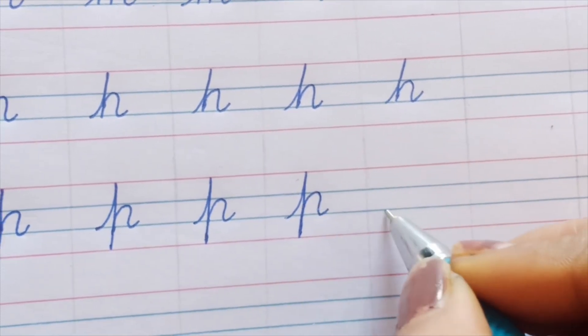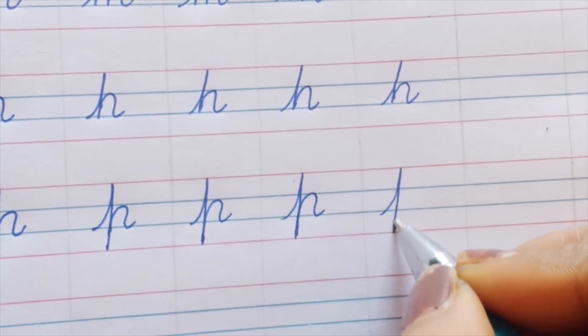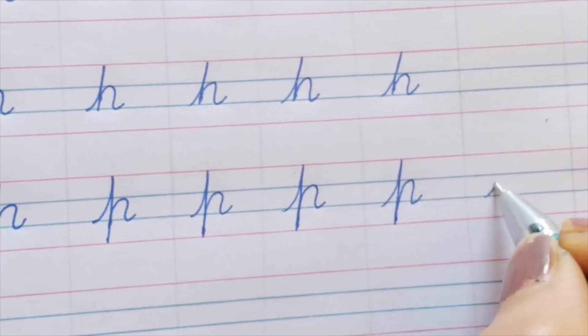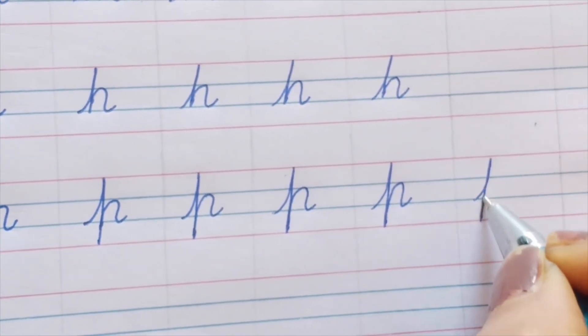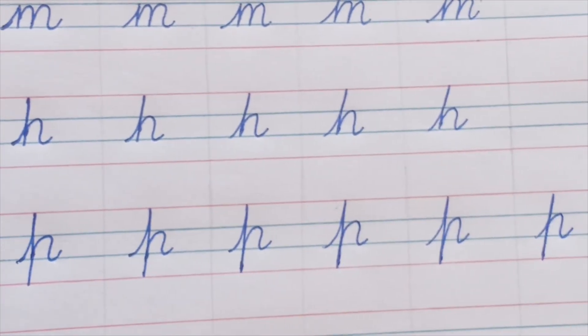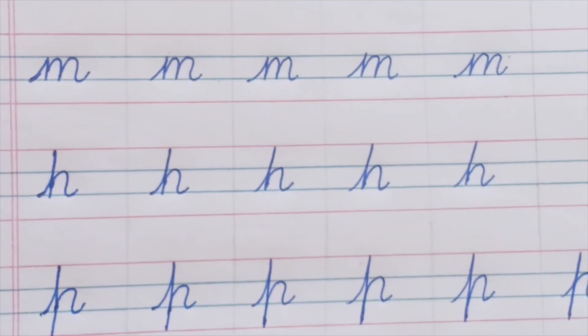One, two, three, and four. This is our small 'p'. So today we have seen the letters: small 'n', 'm', 'h', and 'p'.